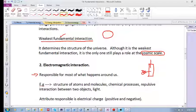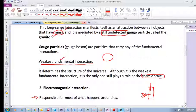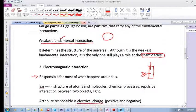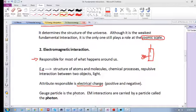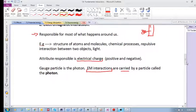So it's responsible for almost everything that happens around us. The attribute responsible is electric charge, both positive and negative. In the same way that the attribute for gravity was mass, the attribute for this interaction is electric charge. And the gauge particle is the photon. The photon carries electromagnetic interactions.